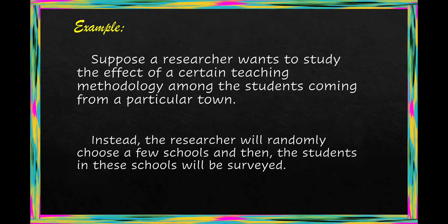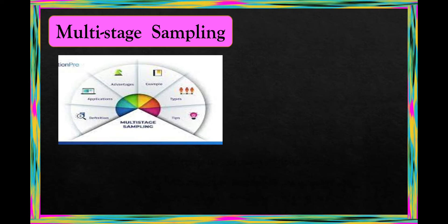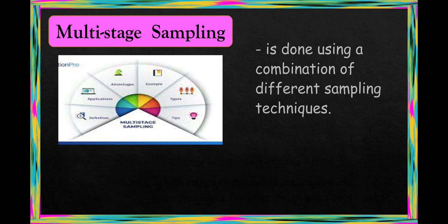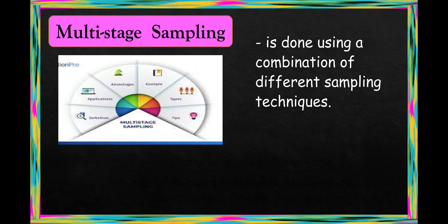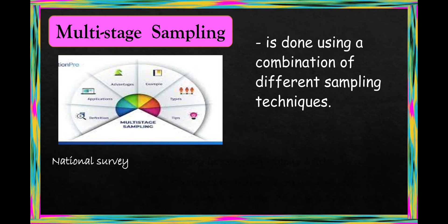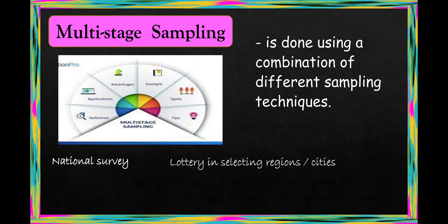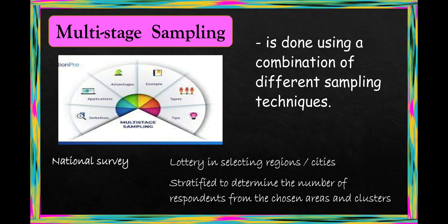The last type is multi-stage sampling. It is done using a combination of different sampling techniques. For example, in a national survey, lottery is used to select regions and cities, and then stratified sampling is used to determine the number of respondents from the chosen areas and clusters.